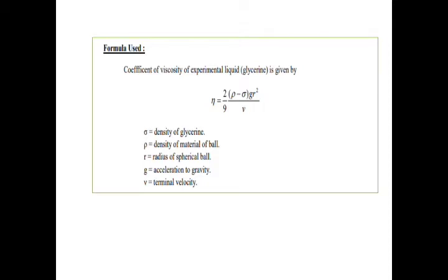η = (2/9) × ((ρ - σ) × g × r²) / v. Here, σ is the density of glycerin, ρ is the density of material of ball, r is the radius of spherical ball,